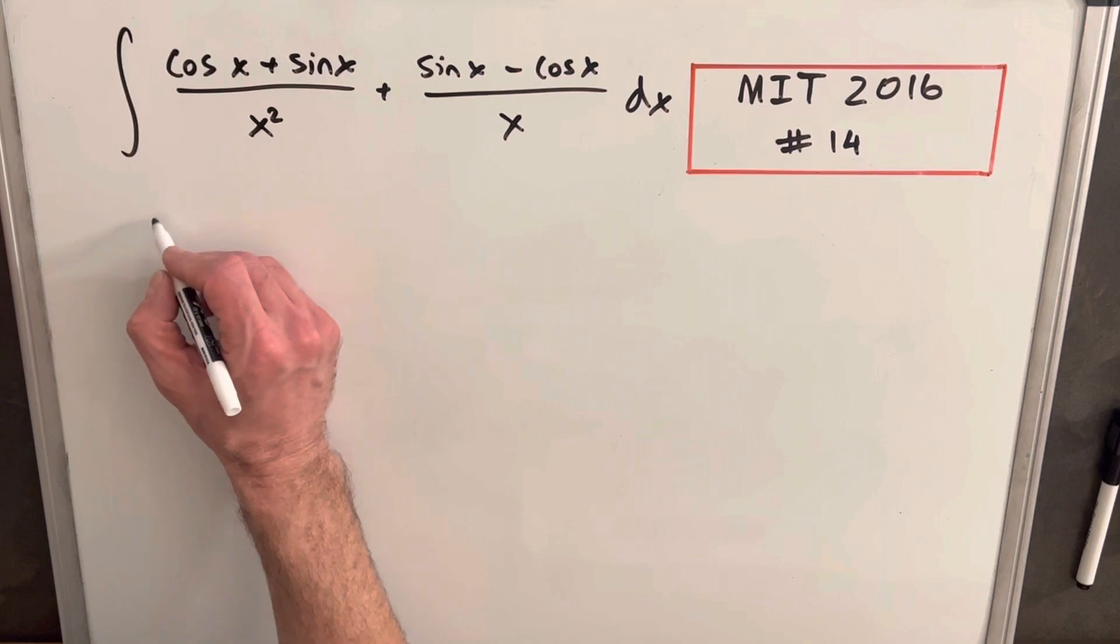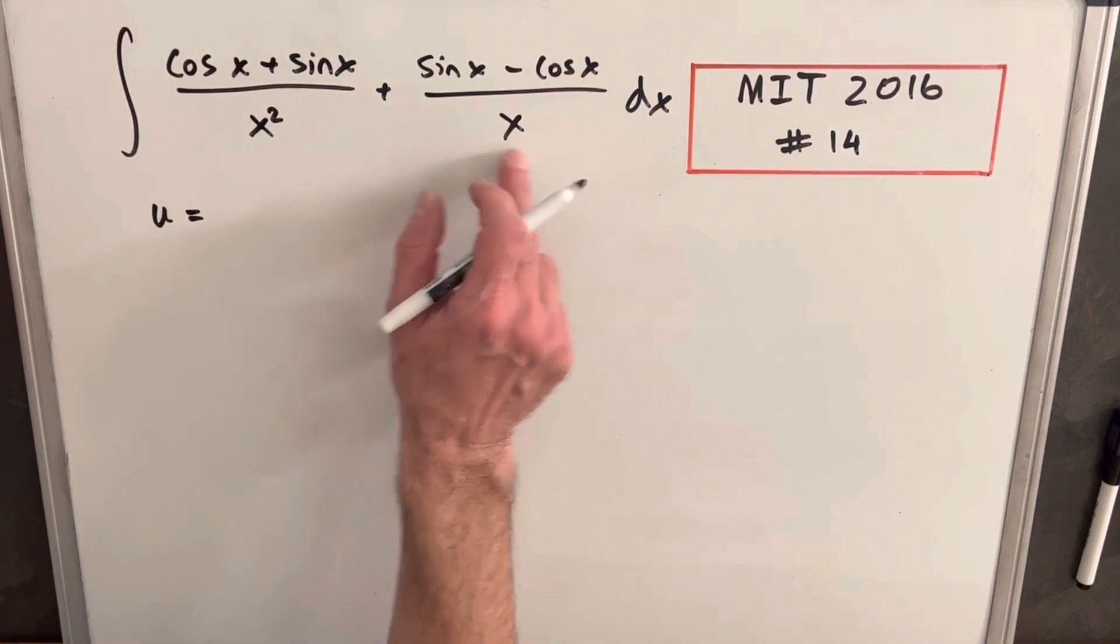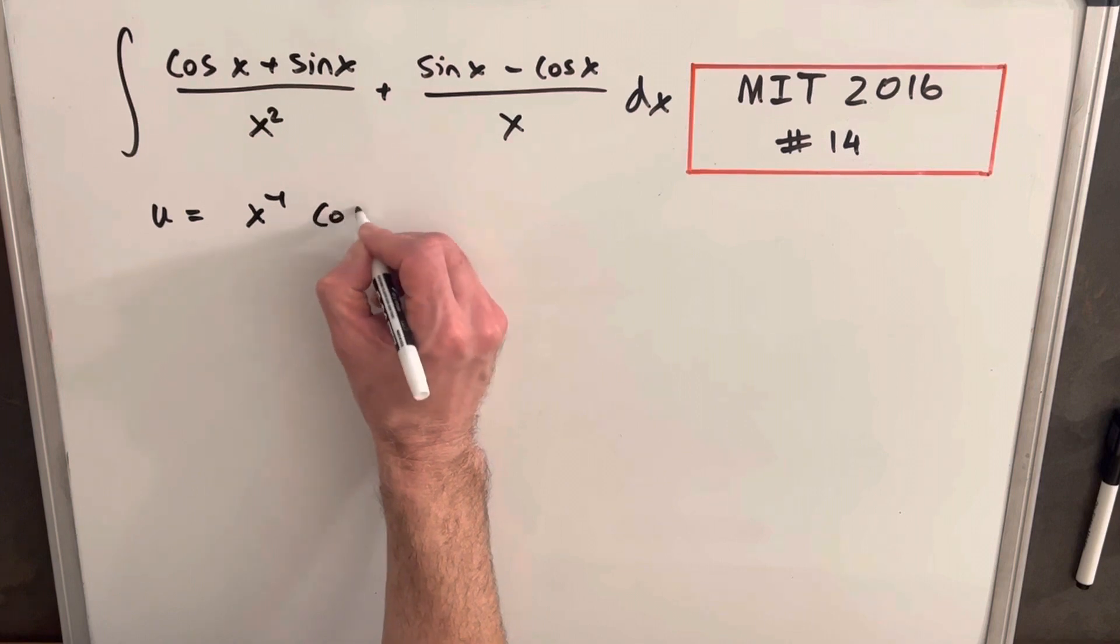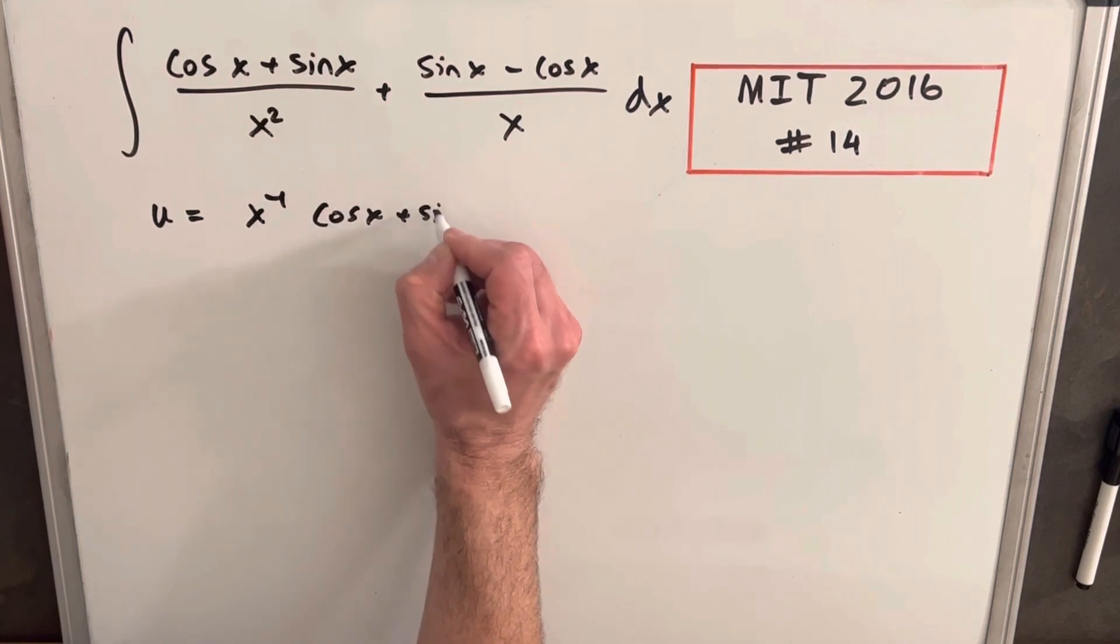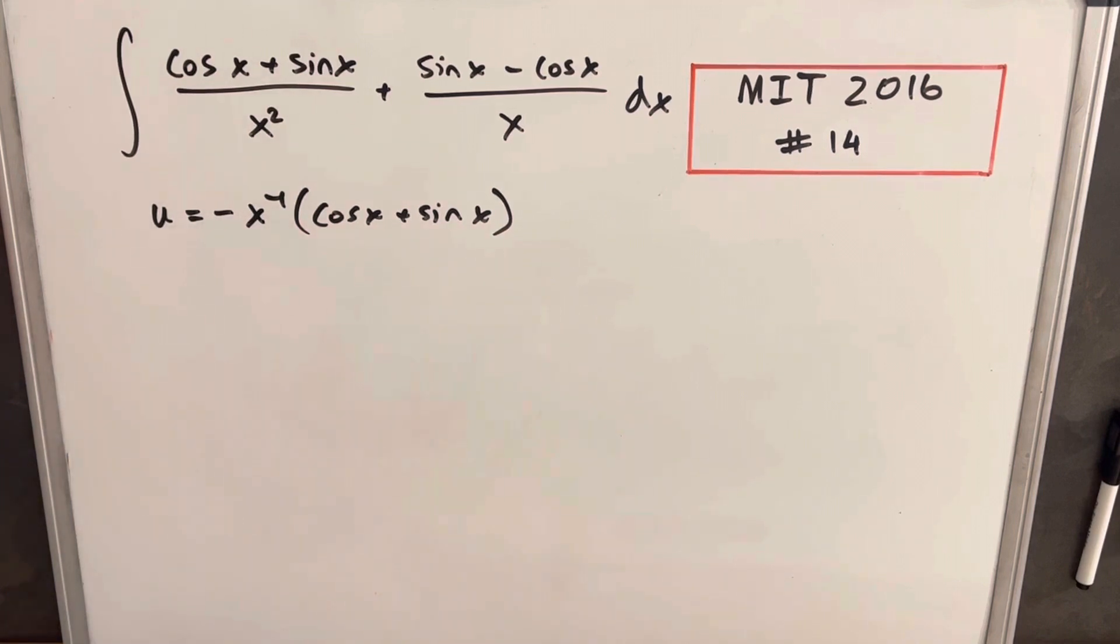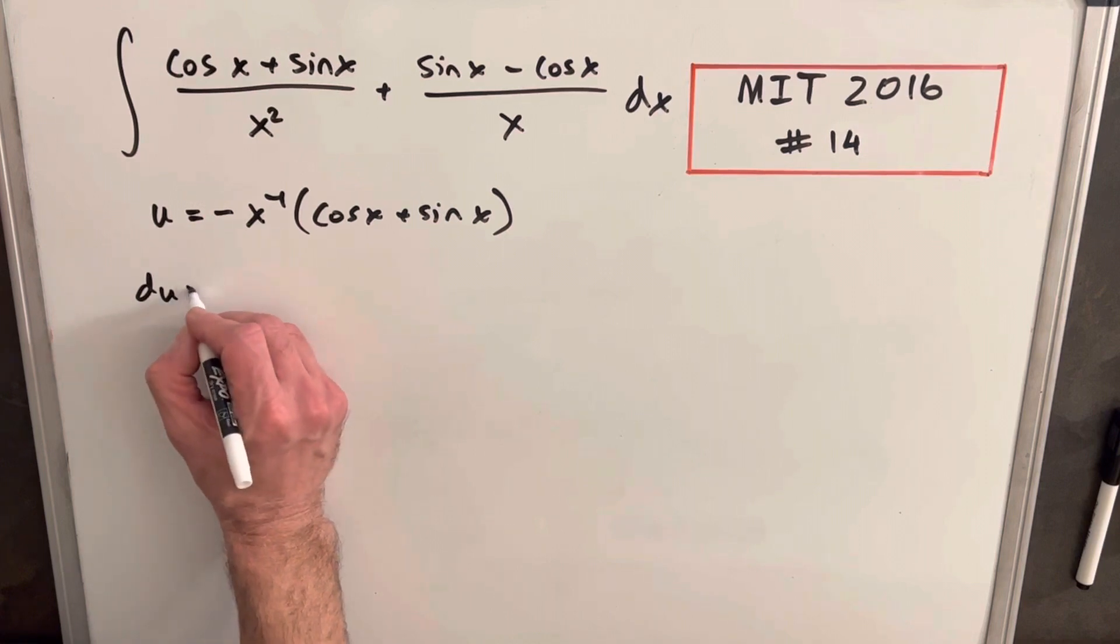What I want to do is use those two things. I'm going to call u equal to x to the minus 1 times cos x plus sine x. I think we'll add a minus, because we know we need that minus. We saw that with both these derivatives. Let's just make sure we have this right.